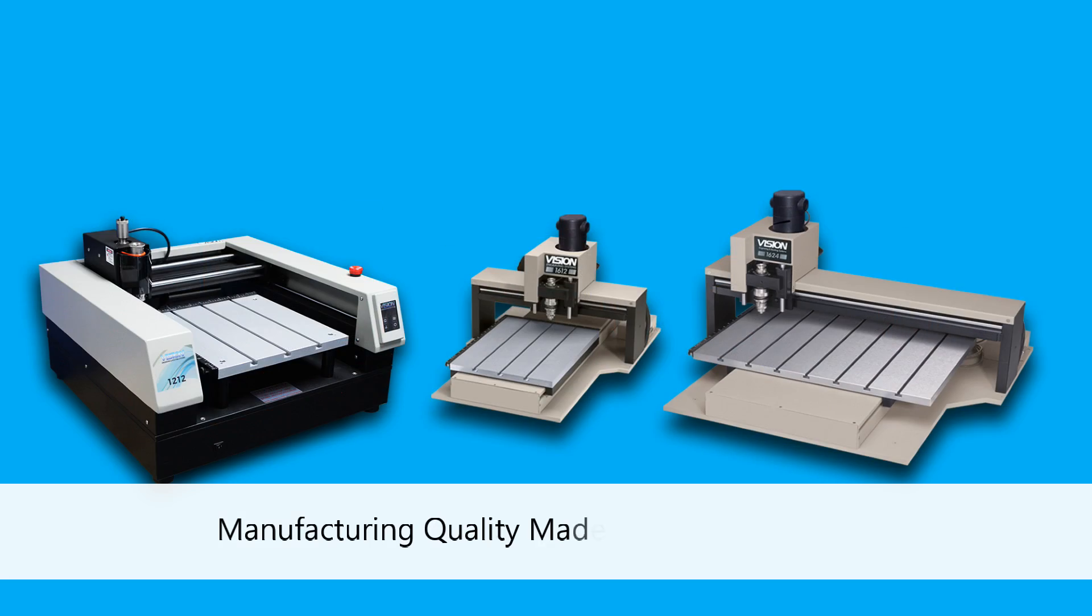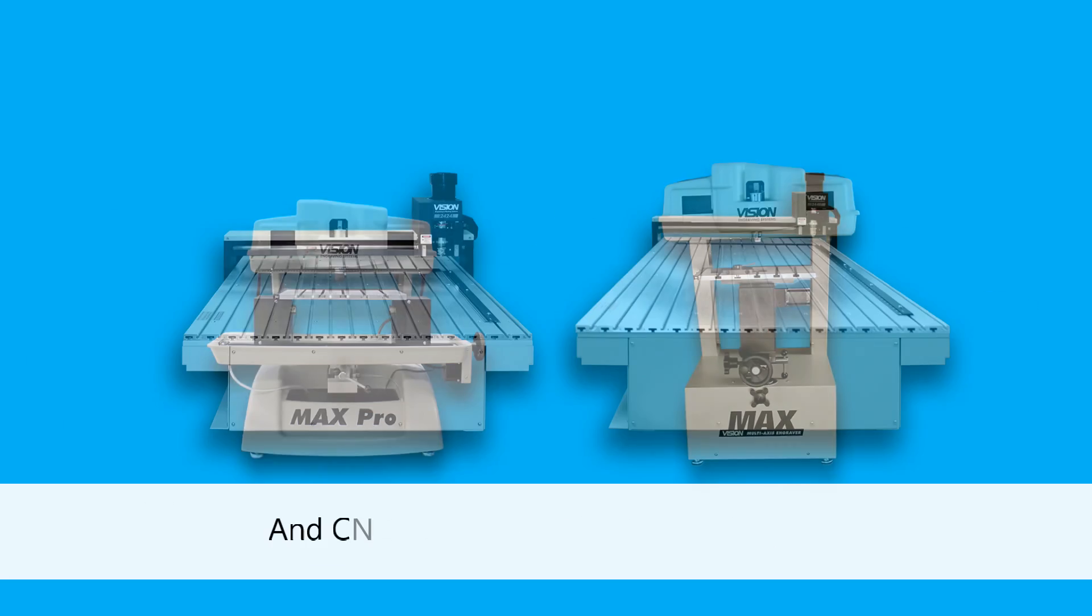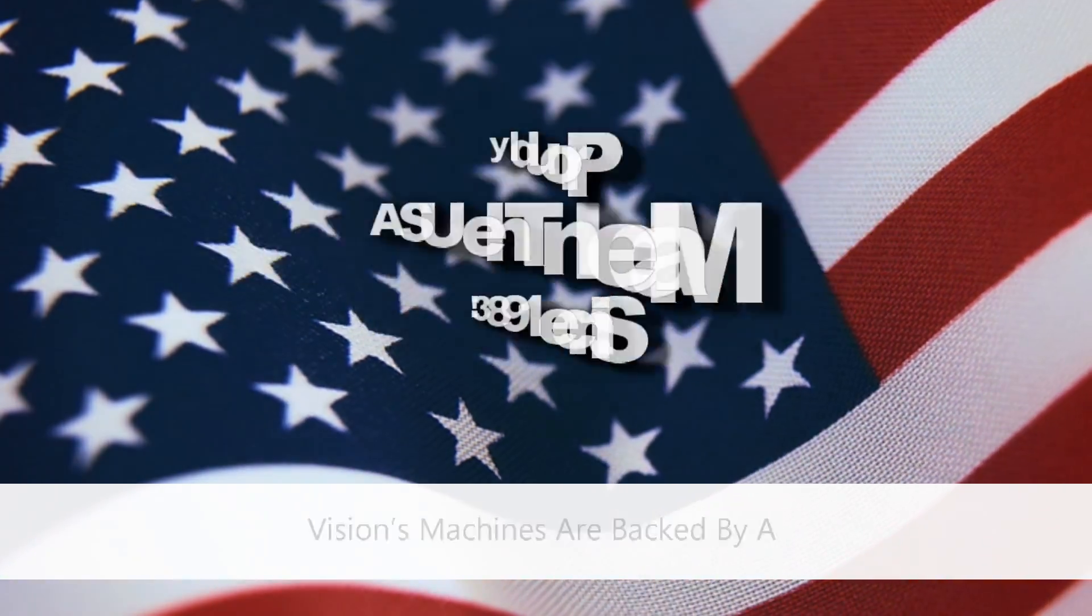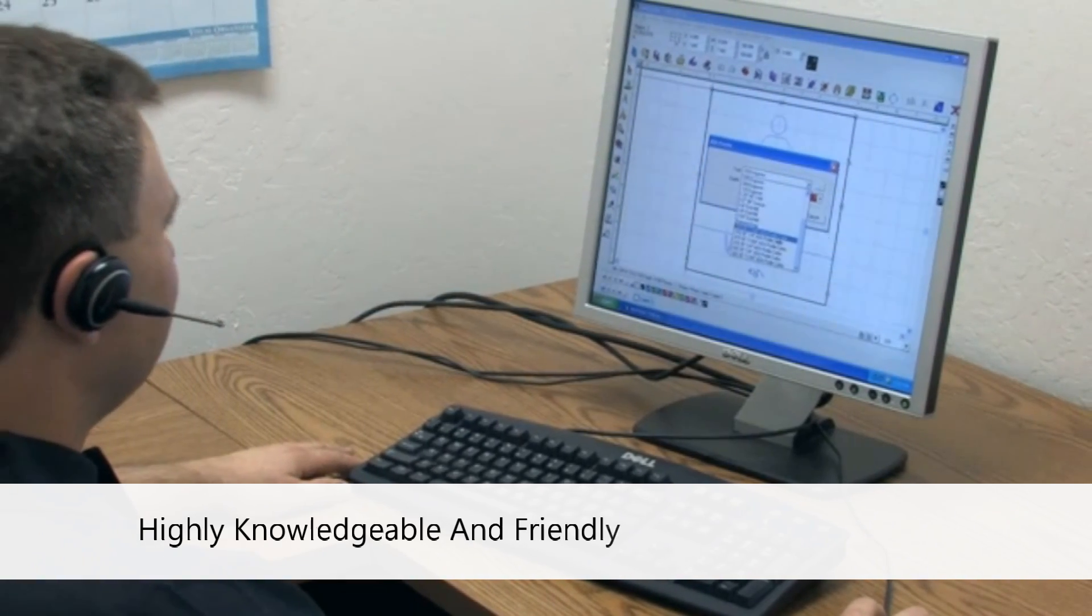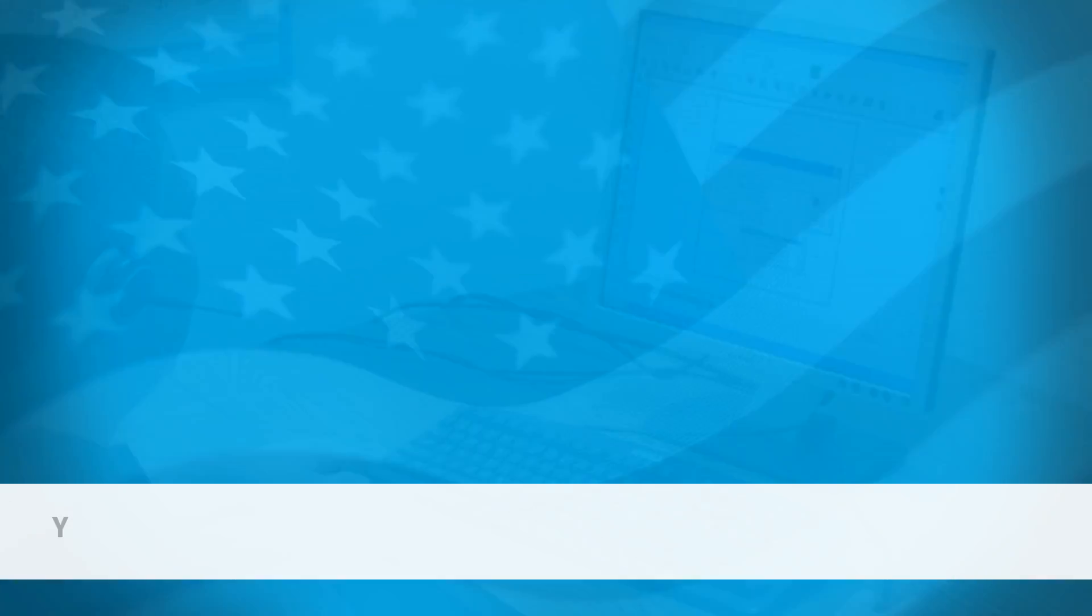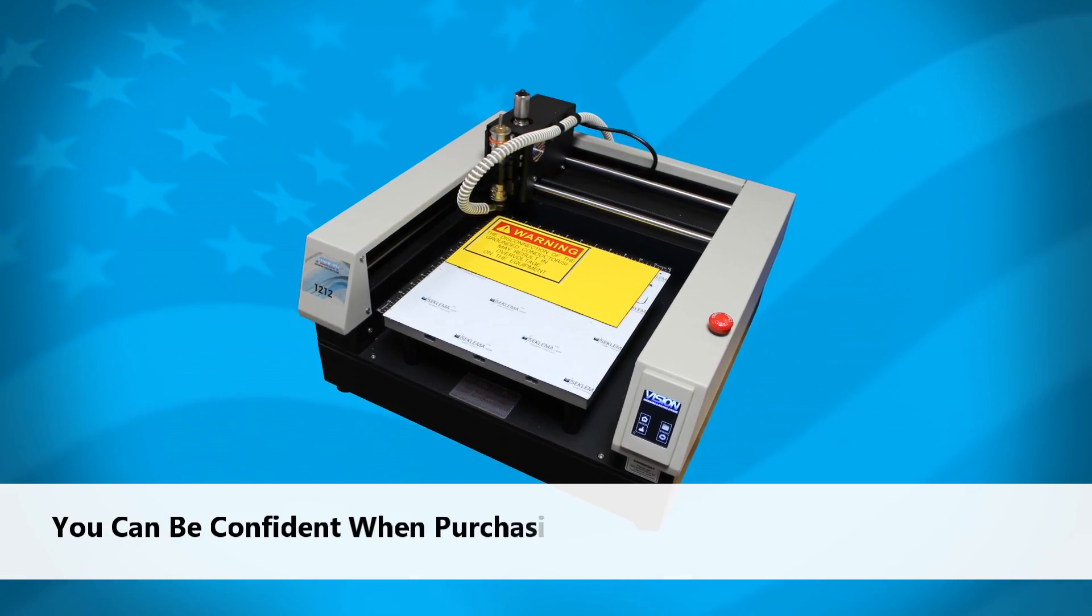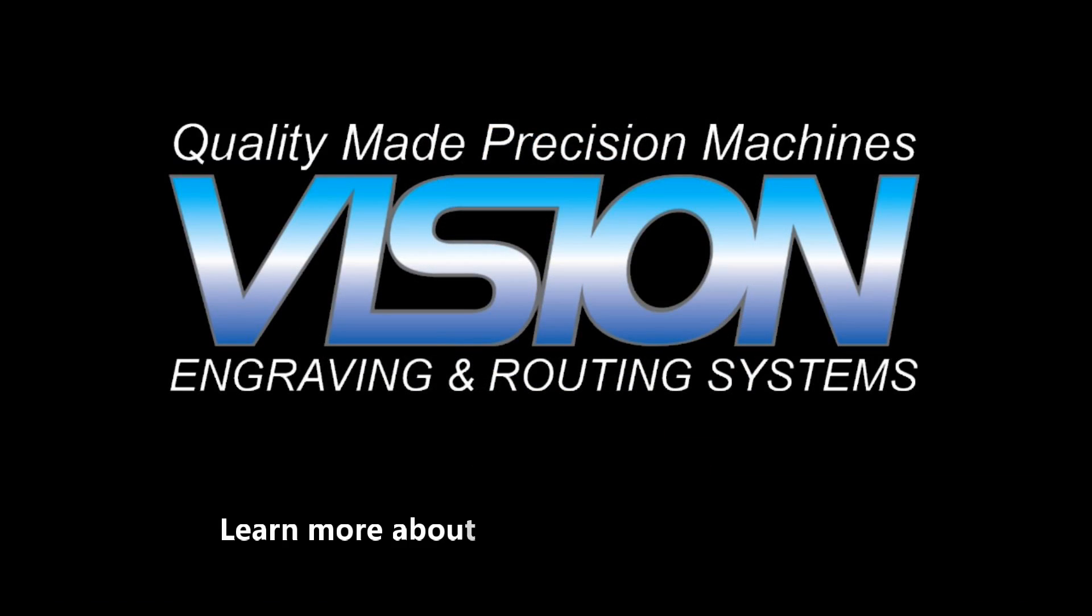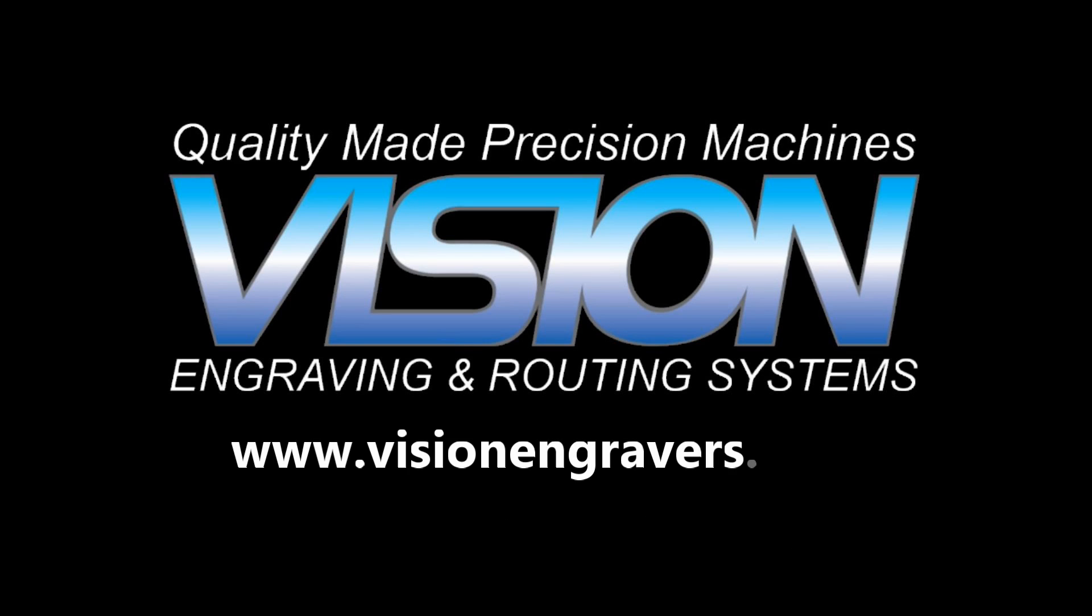Manufacturing quality made precision engravers and CNC routers in the USA since 1983, Vision's machines are backed by a highly knowledgeable and friendly technical support team. You can be confident when purchasing a Vision engraver or CNC router. Learn more about the Phoenix 1212 engraver and Vision's other machines at www.visionengravers.com or call 602-439-0600.